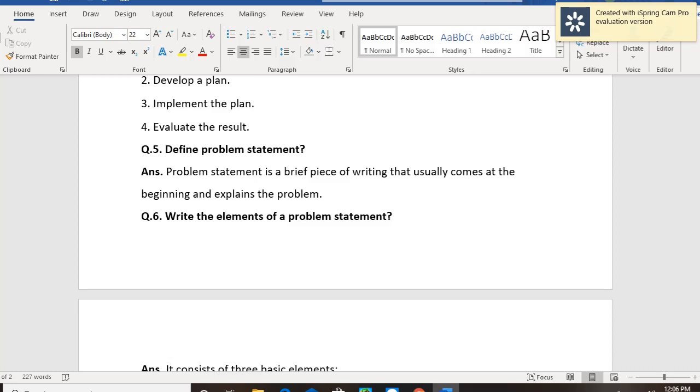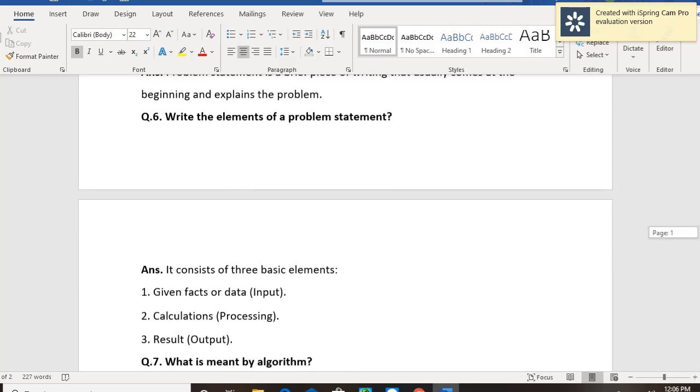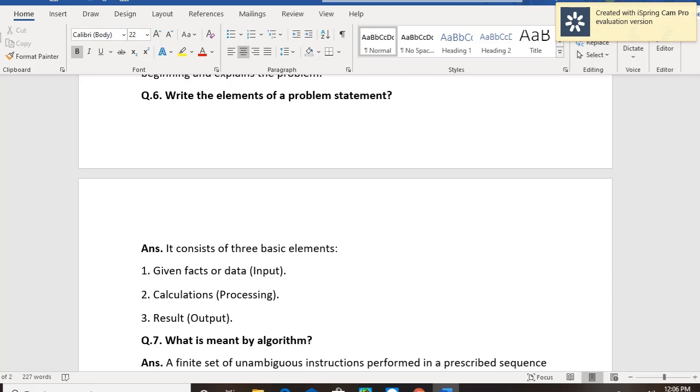Question number 6: Write the elements of problem statement. It has three basic elements. First, given facts and data, which we also call input, like a set of 29 numbers. Second, calculations and processing, where we apply the logic that we have developed, like checking which numbers are divisible. Third, the data comes back as results, which we call output, shown on our computer screen.